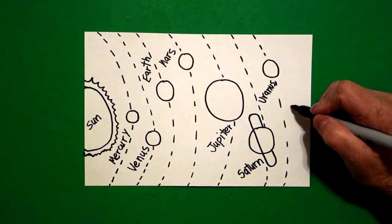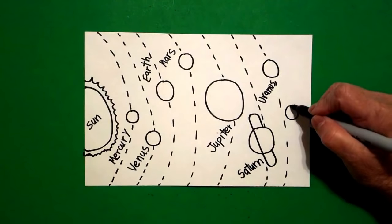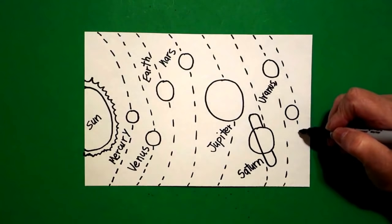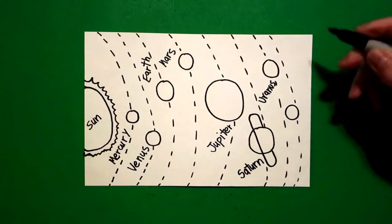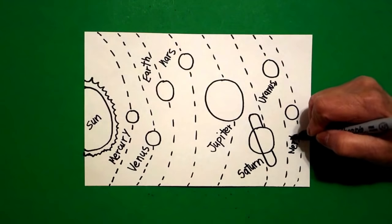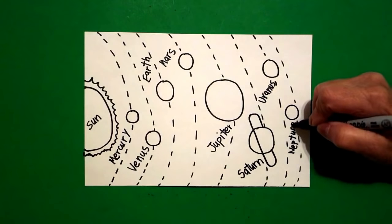I'm going to come down right about here and I'm going to draw another smaller circle. Add my dotted line orbit. Keep going. And this is Neptune. N-E-P-T-U-N-E.